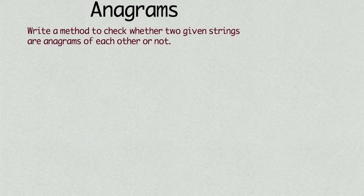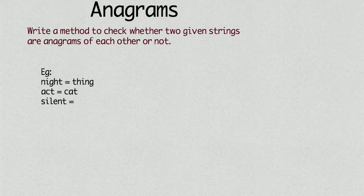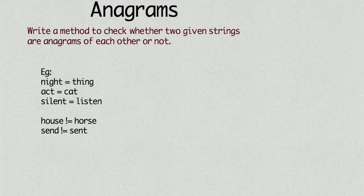Anagrams are words that have the same characters but the order of characters can be different. For example, knight and thing, act and cat, silent and listen are anagrams of each other because they have same characters in different order.